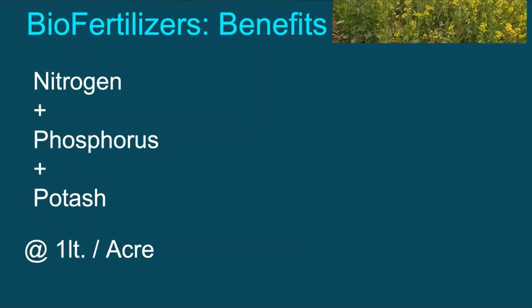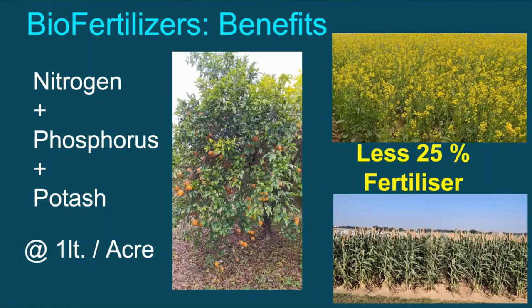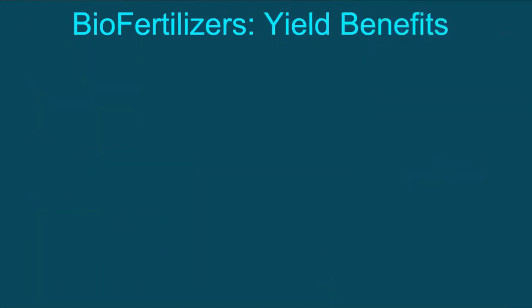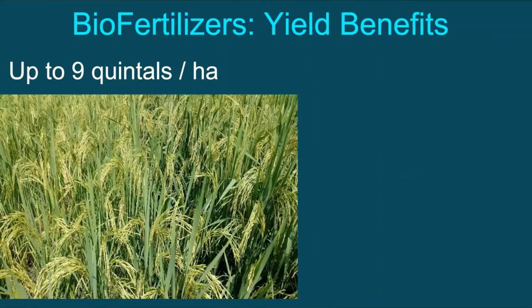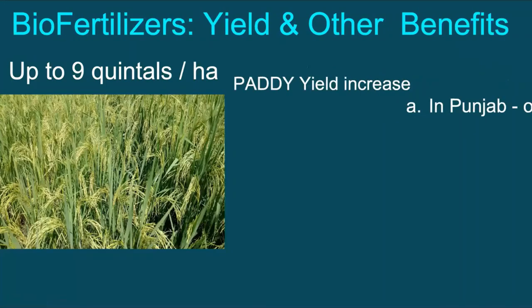As per our experience of dealing with biofertilizers in different Indian states, the direct benefit using bio N, P, K, is saving of 25% conventional fertilizers, with no reduction in yield, even from the very first season. If applied along with the existing fertilizer doses, yield of paddy increases up to 9 quintals per hectare, and that of tomato up to 16 quintals per hectare. Some statewide observations are...